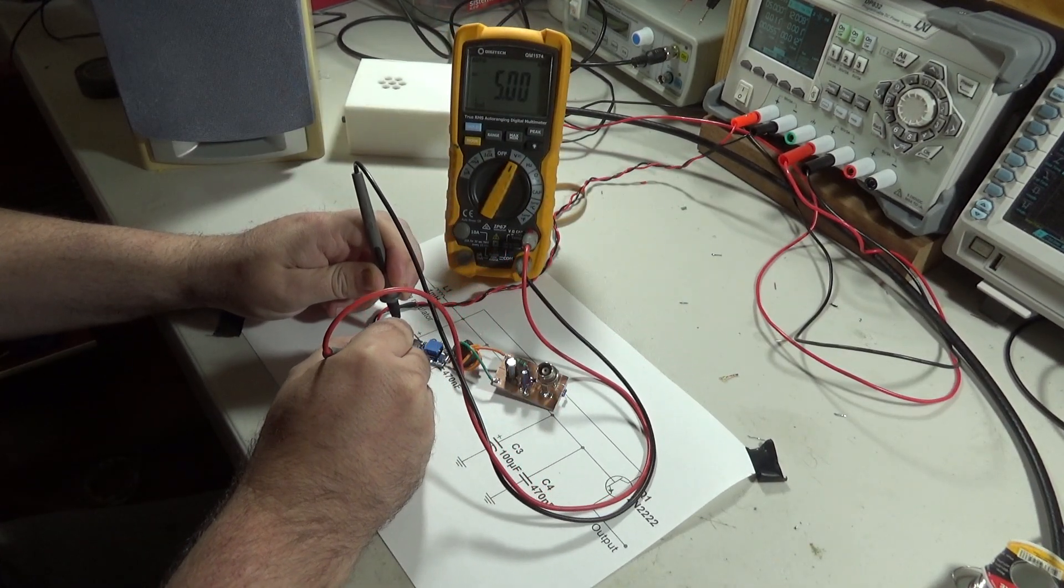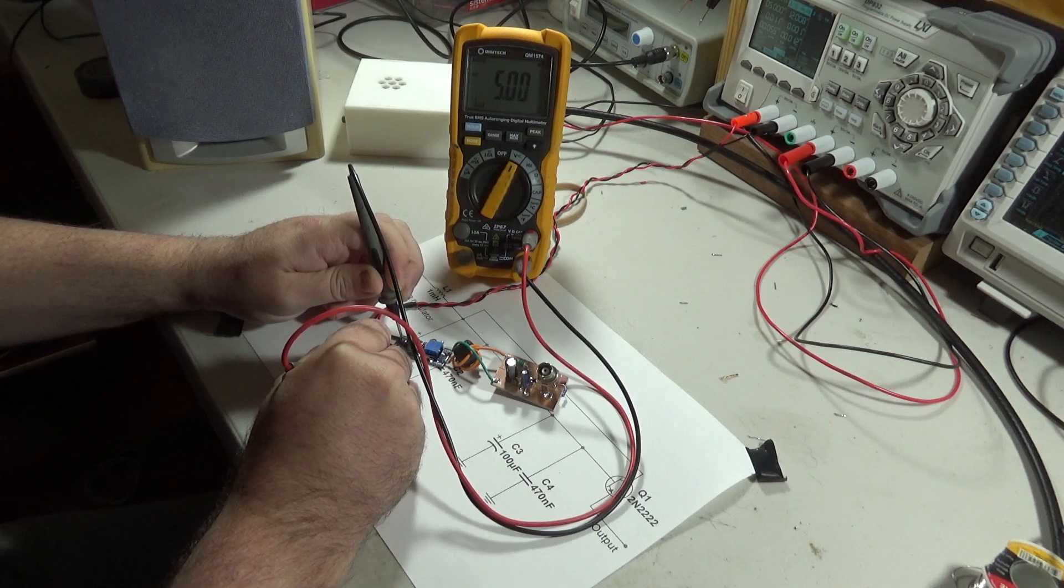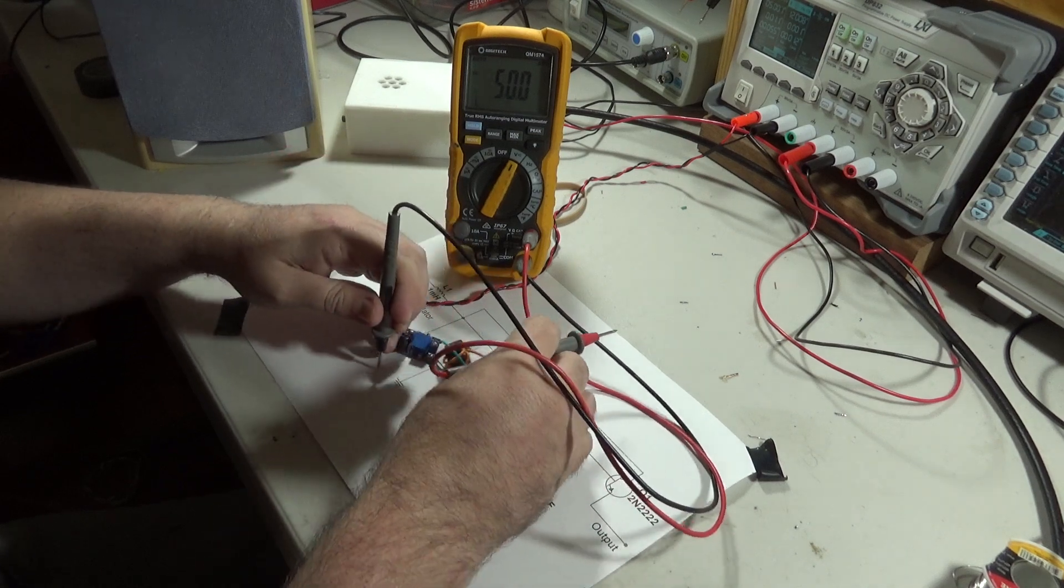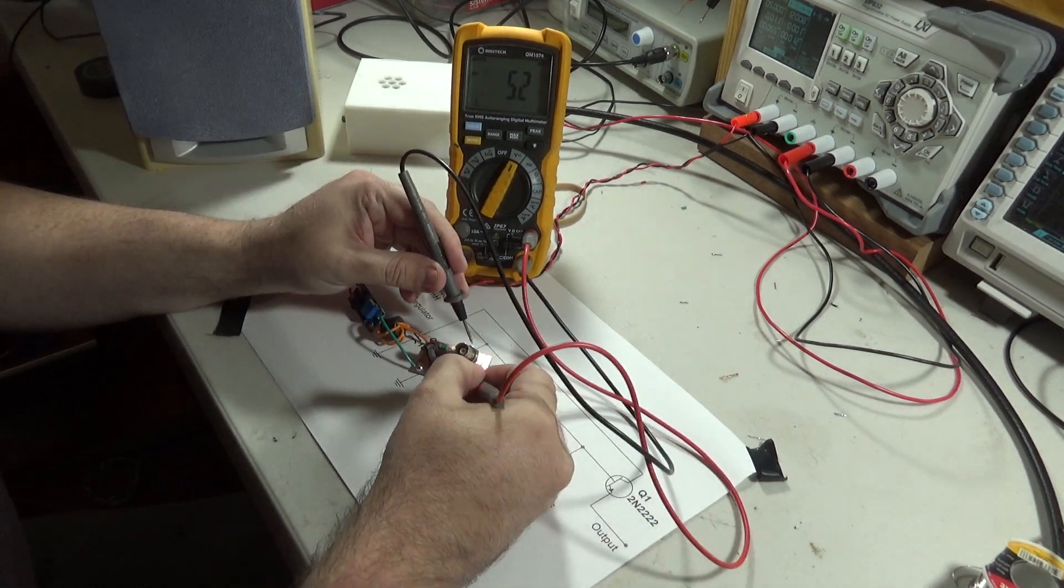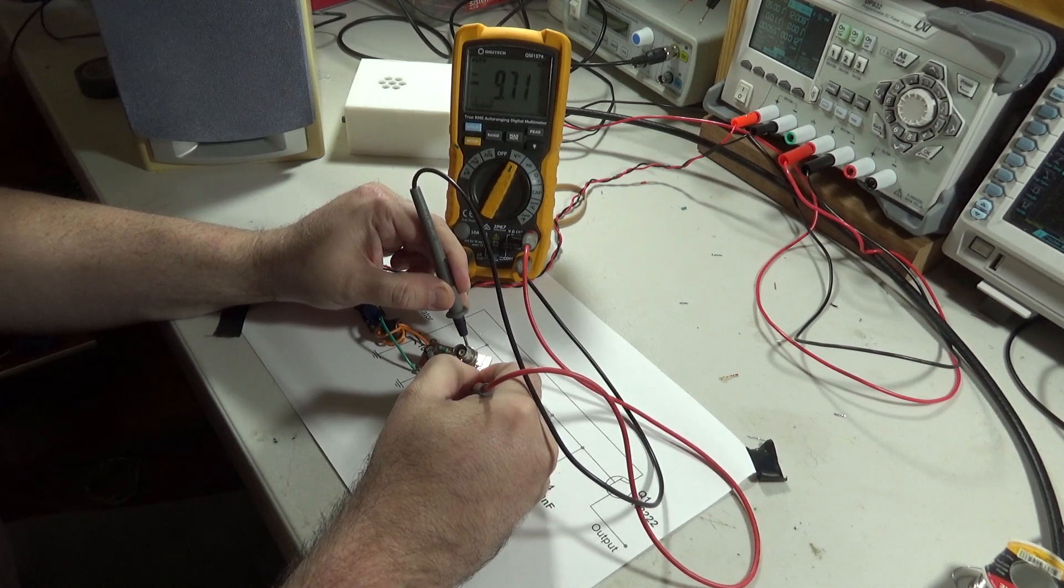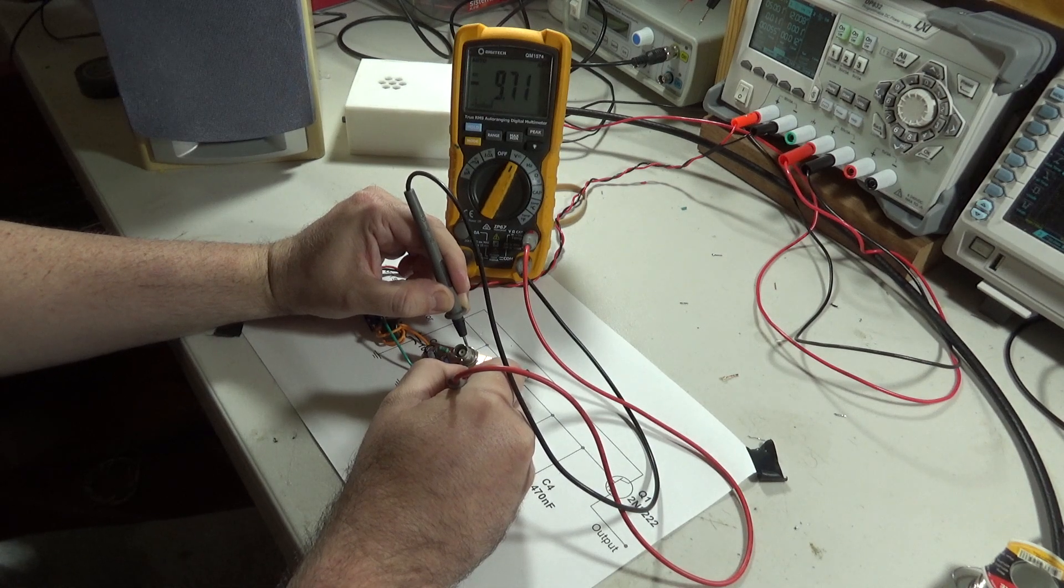Just so you know that I'm not lying to you let's have a measurement on the input of the switching converter. So we've got five volts on the input. And on the output we've got about ten volts.